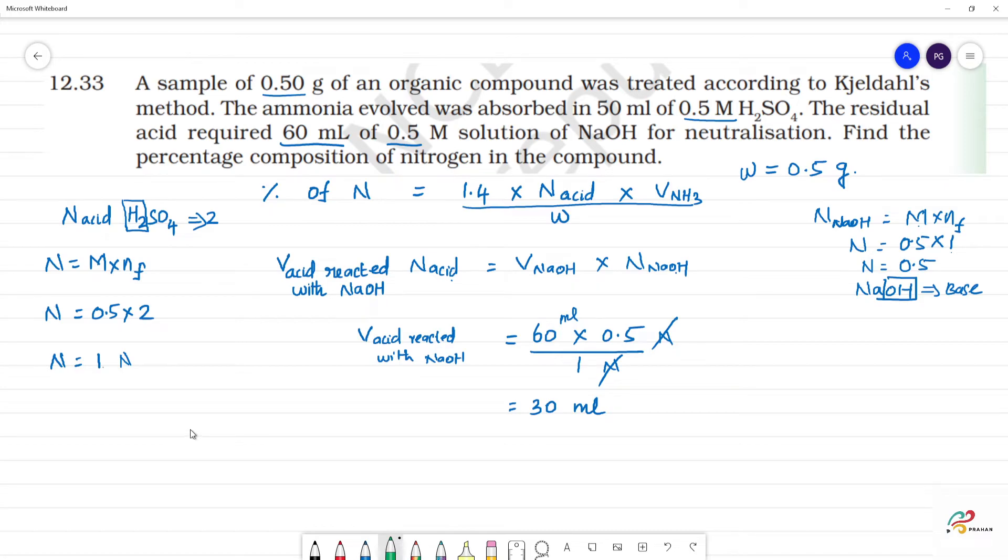Now, next we can calculate volume of ammonia. Volume of ammonia is equal to... were absorbed by 50 ml of H2SO4. This is initial volume of acid minus volume of acid reacted with NaOH. Now, initial volume of 50 ml minus volume of acid reacted with NaOH, which is 30 ml, so total available 20 ml.